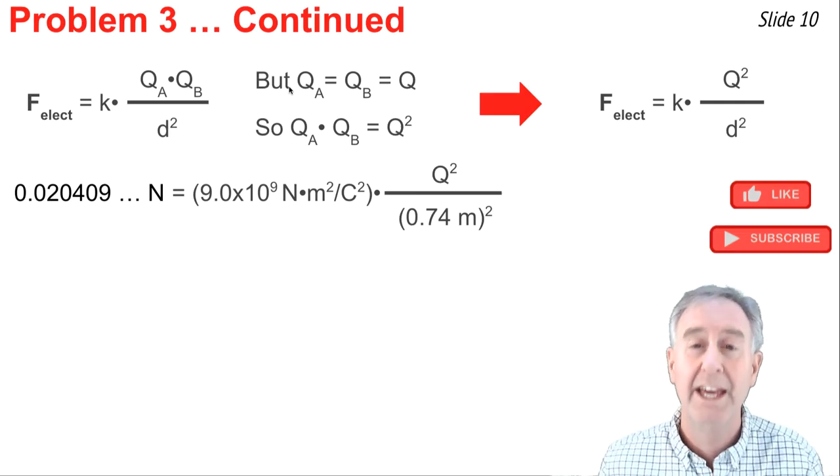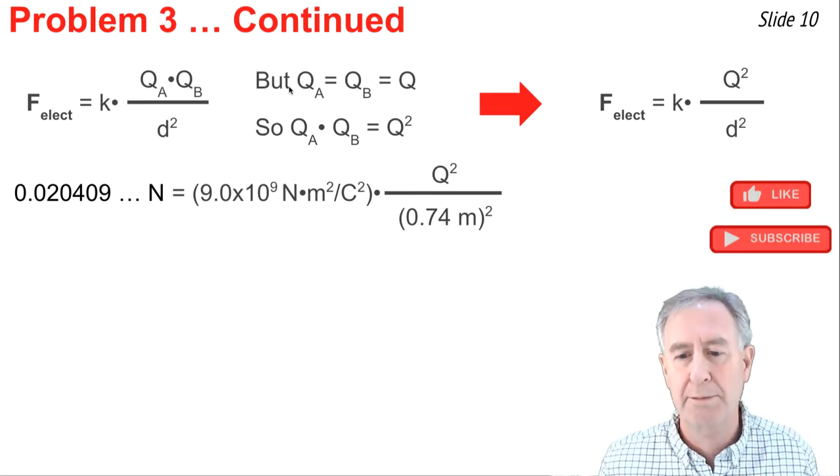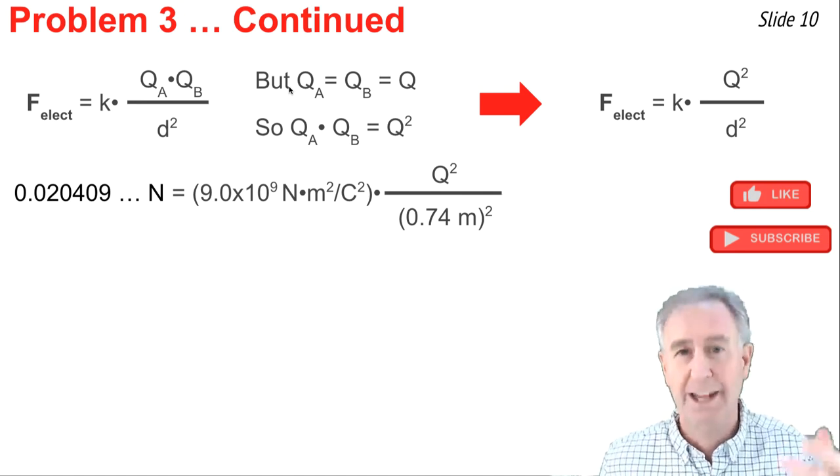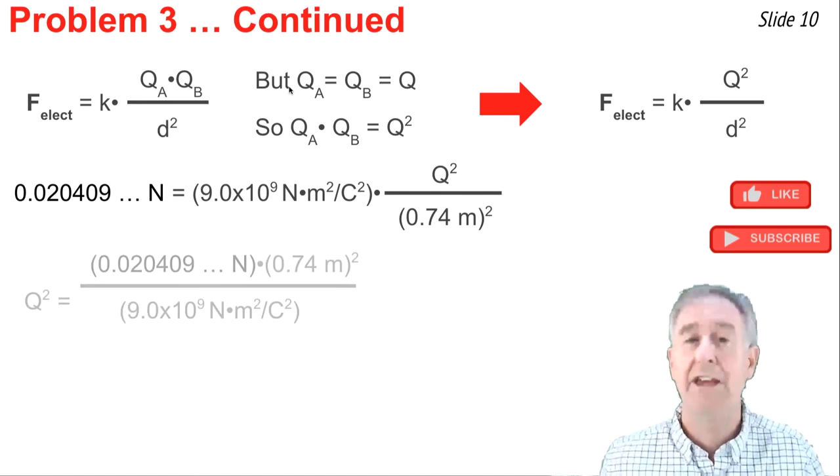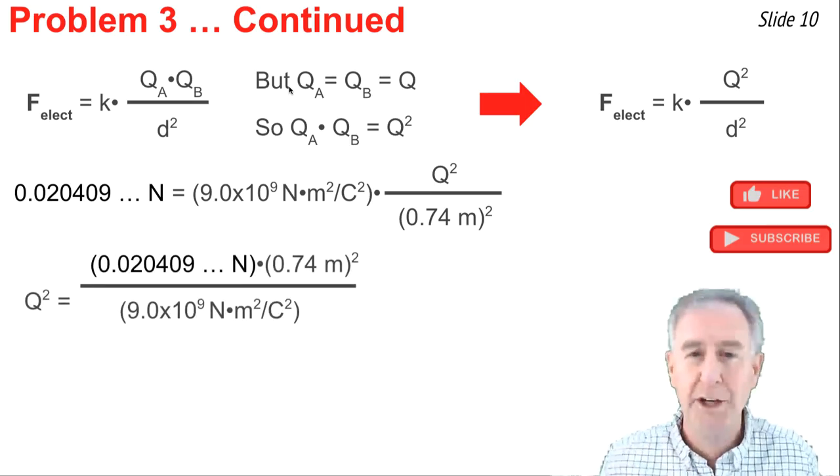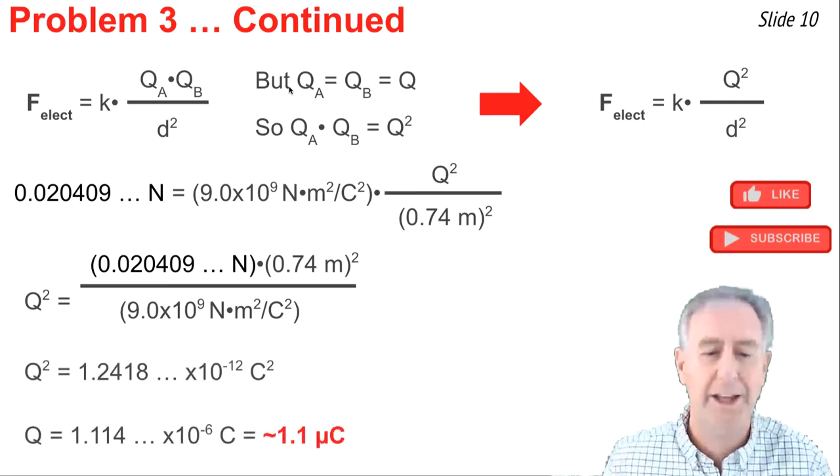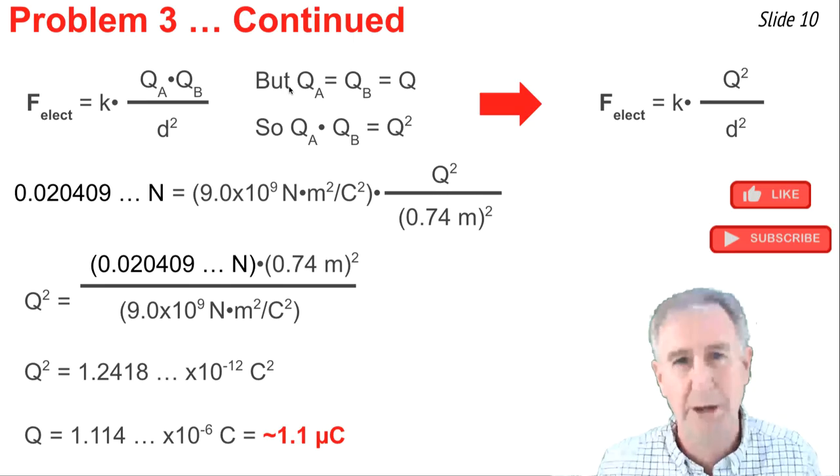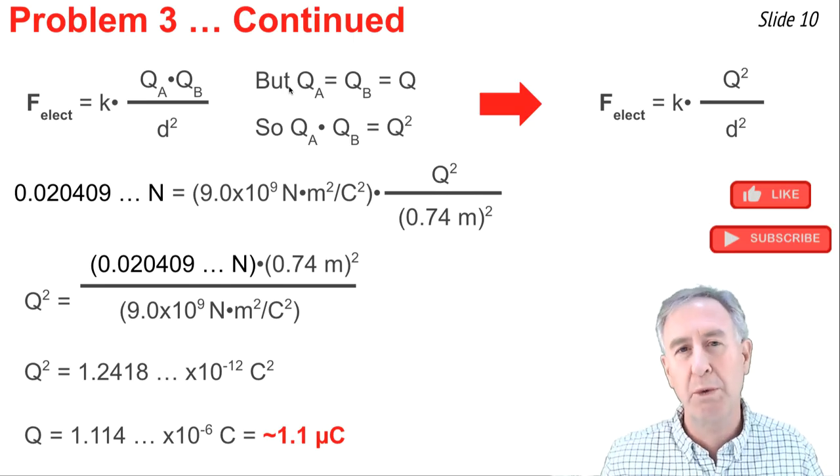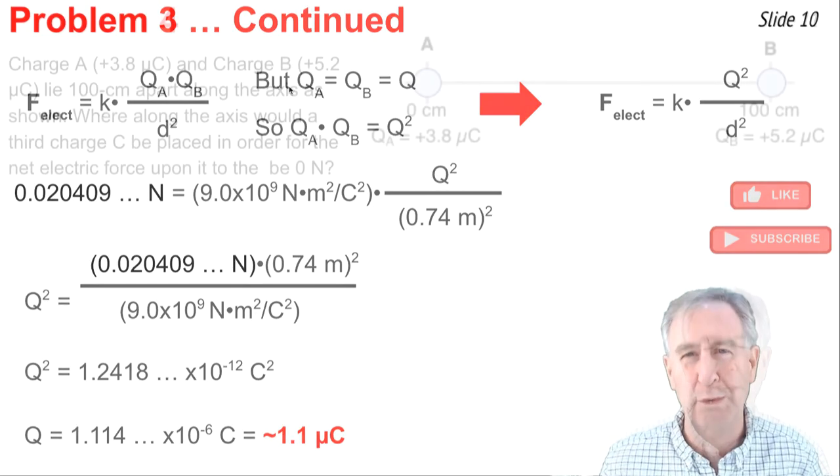Now I'm looking to solve for Q. So I'm going to do some algebra. Two steps here. Multiply both sides of the equation by 0.74 squared, and divide both sides of the equation by the value of K. And the equation turns into this, and I'm solving for Q. So I evaluate what the right side of this equation is, and it comes out to be 1.2418 times 10 to the negative 12. I do that on my calculator, and I take the square root of both sides. I end up with 1.114 times 10 to the negative 6 coulombs, or 1.1 microcoulombs.